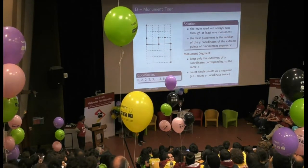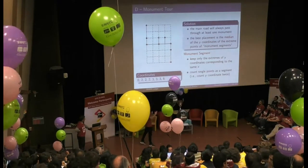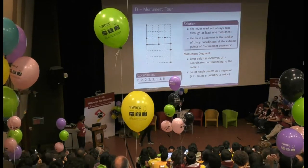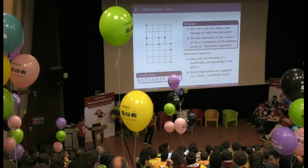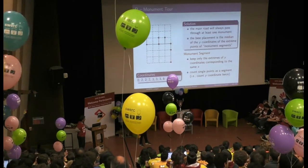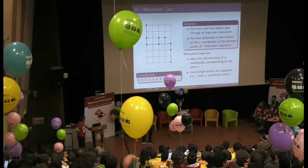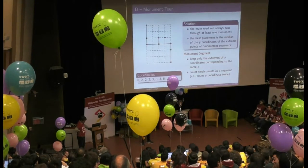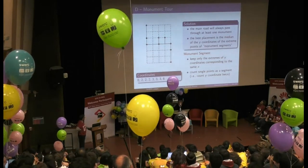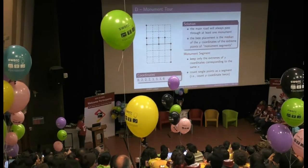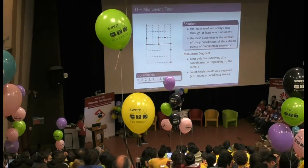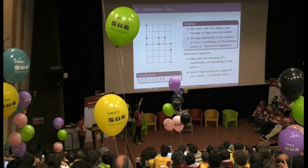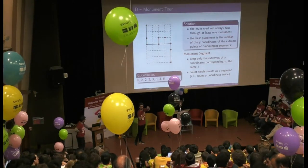The second key observation is that it is sufficient to take the point at the median of the y-coordinates. You only need to keep the y-coordinates and take the median. Additionally, for each distinct x-value you only need to keep the extreme values — the red points shown here. Single points must be counted twice. In this example, corresponding to the second sample, both a road passing through coordinate 2 or coordinate 3 gives the optimal solution.